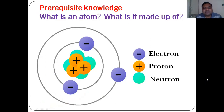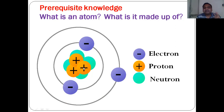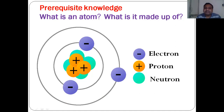Before that, prerequisite knowledge is about the atom. What is an atom? This is something you have learned in earlier standards. Atom is the smallest particle of any matter. Inside the atom, at the nucleus there are two main particles — proton and neutron — lying in the nucleus, and electrons are moving in a specific orbit around the nucleus. Atom is made up of mainly three particles: electron, proton, and neutron.